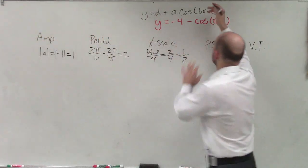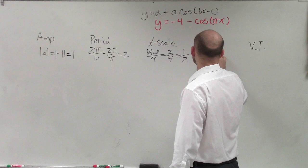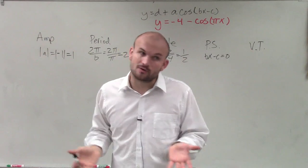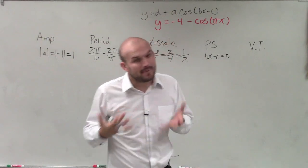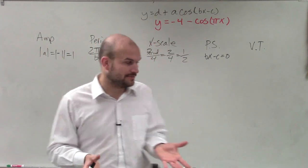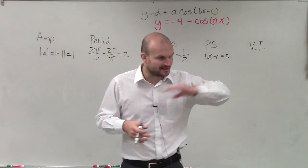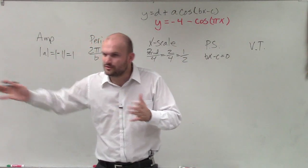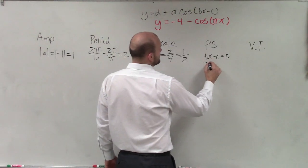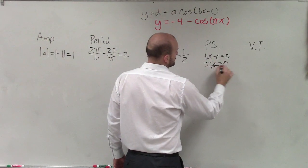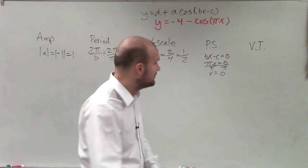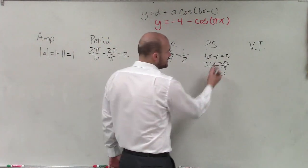Our phase shift: we always take what's inside of our function and set it equal to 0. That's going to tell us where our graph is going to shift horizontally, and it's also a good place to start our graph. The graph goes indefinitely to the left and to the right, but starting at the phase shift helps. In this case, we have πx equals 0, so x equals 0 — we can start at 0. There's really no phase shift; you can just say there's none.